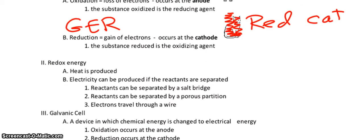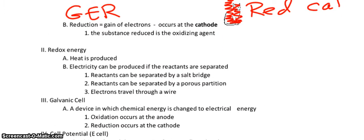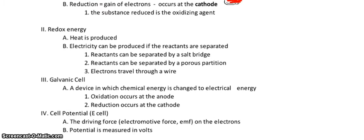The galvanic cell is a device in which chemical energy is changed into electrical energy, and once again, oxidation occurs at the anode, and reduction occurs at the cathode.